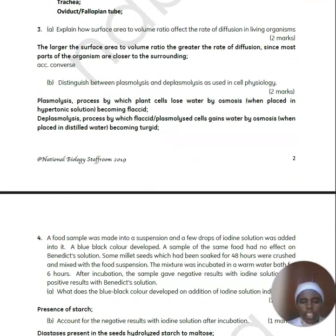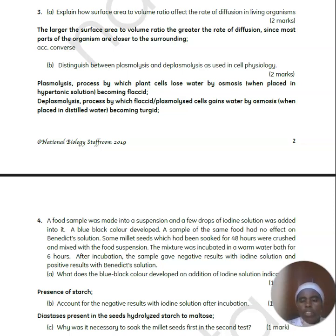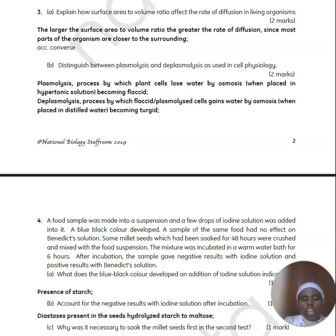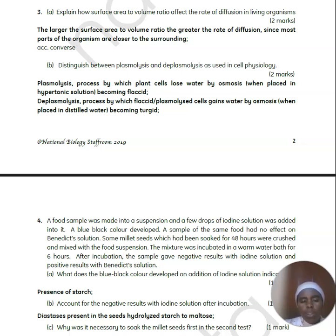Explain how the surface area to volume ratio affects the rate of diffusion in living organisms. Diffusion is the movement of molecules and ions from a region of high concentration to a region of low concentration down a concentration gradient. For diffusion to take place, there are factors that affect it — for example, the surface area to volume ratio. A small-sized molecule has a large surface area to volume ratio, while a big-sized molecule has a smaller surface area to volume ratio. The smaller the molecule or the larger the surface area to volume ratio, the higher the rate of diffusion.